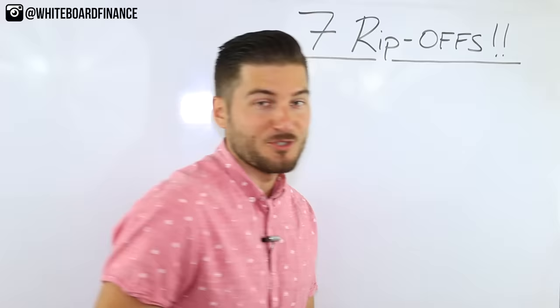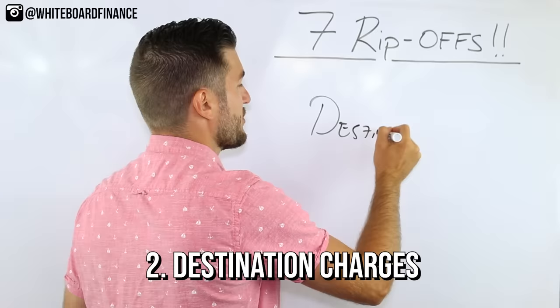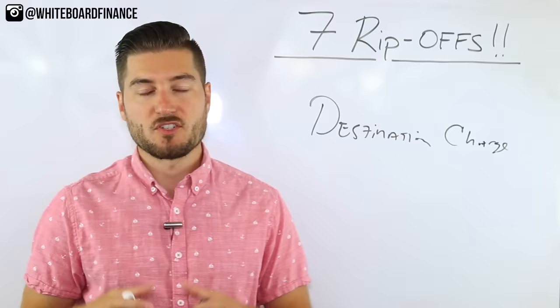Number two is the destination charge. The destination charge is actually mandated to be displayed on all the stickers by the federal government. That's called the Mahoney sticker, aka the sticker if you will.